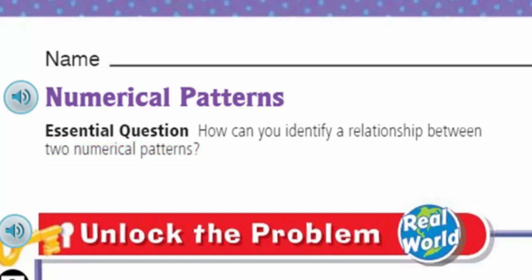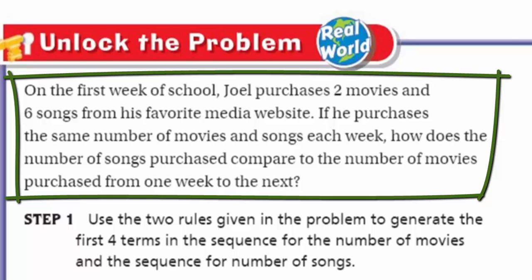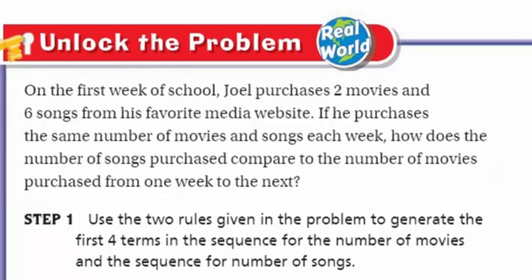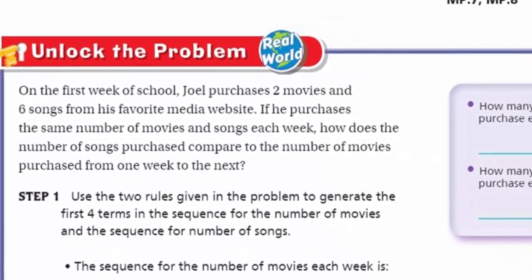A relationship? Really? With numbers? Of course. How can you identify — to name — a relationship between two numerical patterns? This definitely sounds like sequences. But my friends, we cannot move any further unless we unlock the problem. Real world, baby. It says on the first week of school, Joel purchases two movies and six songs from his favorite media website. If he purchases the same number of movies and six songs each week, how does the number of songs purchased compare to the number of movies purchased from one week to the next? This is about sequence.